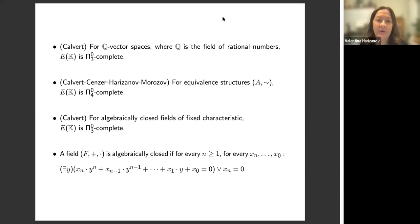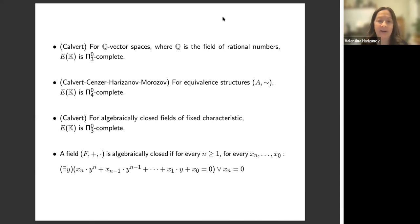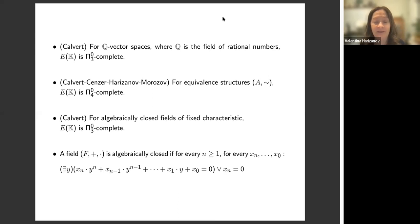Calvert showed that for some structures the isomorphism problem is also fairly low in the arithmetical hierarchy. For example, for Q-vector spaces (or over any computable field), E(K) is Π⁰₃-complete. For equivalence structures it is Π⁰₄-complete. Calvert also showed that for algebraically closed fields of fixed characteristic, the isomorphism problem is Π⁰₃-complete — so somehow we can identify isomorphic structures without actually searching for the isomorphism.